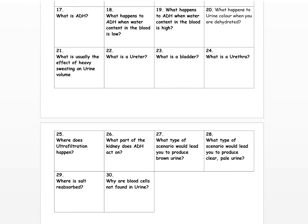Question twenty: what happens to urine colour when you are dehydrated? It gets darker — it goes a darkish brown eventually. Question twenty-one: what is the effect of heavy sweating on urine volume? If you sweat heavily, you're going to lose water content in the blood. The consequence is that there will be more reabsorption in the kidney and the urine volume will decrease.